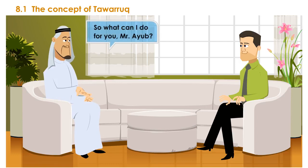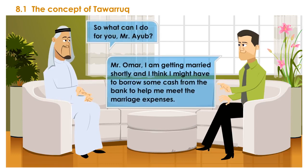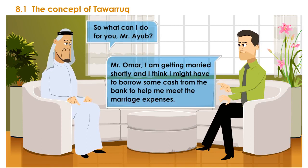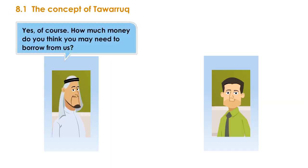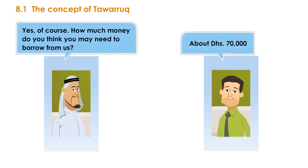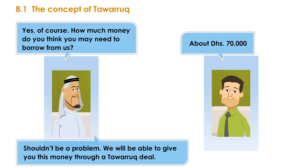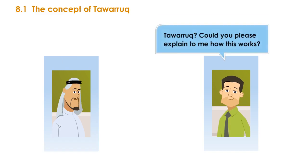Mr. Omar: 'So what can I do for you, Mr. Ayub?' Ayub: 'Mr. Omar, I am getting married shortly and I think I might have to borrow some cash from the bank to help me meet the marriage expenses.' Mr. Omar: 'Of course, how much money do you think you may need to borrow from us?' Ayub: 'About 70,000 dirhams.' Mr. Omar: 'Shouldn't be a problem. We will be able to give you this money through a Tawaruk deal.' Ayub: 'Tawaruk? Could you please explain to me how this works?'